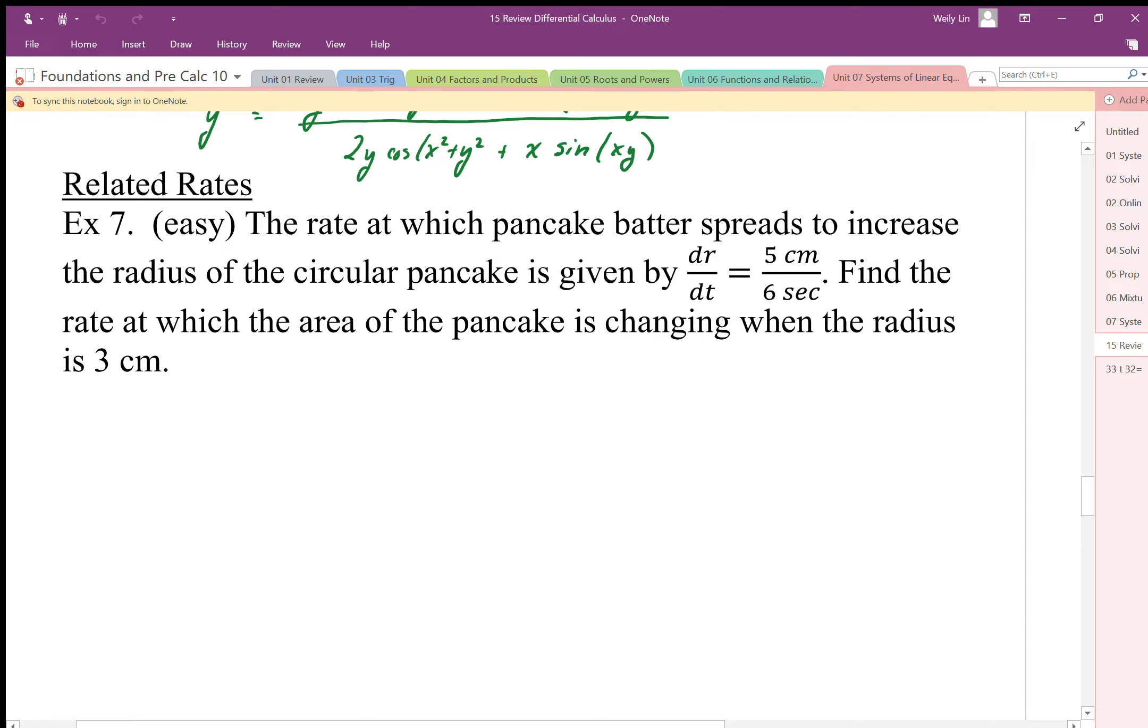...is given by dr/dt = 5 cm / 6 sec. That means the pancake is growing or spreading and making a bigger circle at a rate of 5 centimeters every 6 seconds.